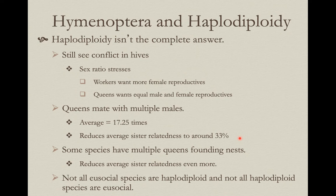Lastly, not all eusocial species are haplodiploid — naked mole rats are not haplodiploid but are eusocial. Additionally, not all haplodiploid species are eusocial; some Hymenoptera live solitary lives. Just because you're haplodiploid does not mean you're going to be eusocial.